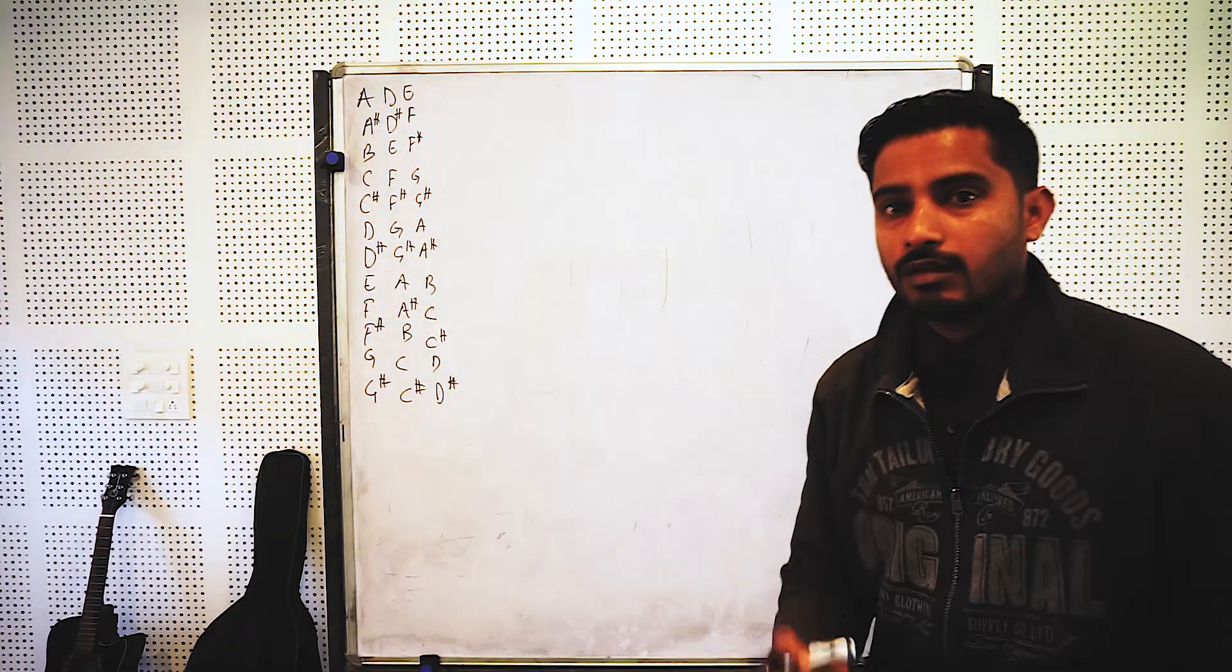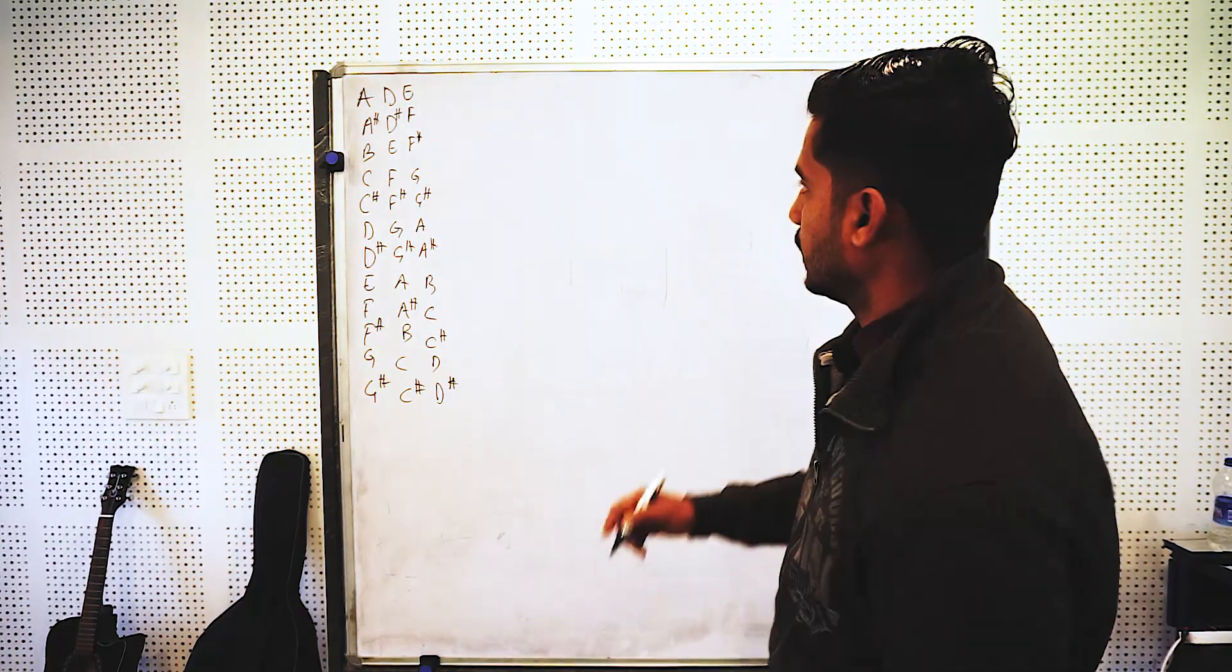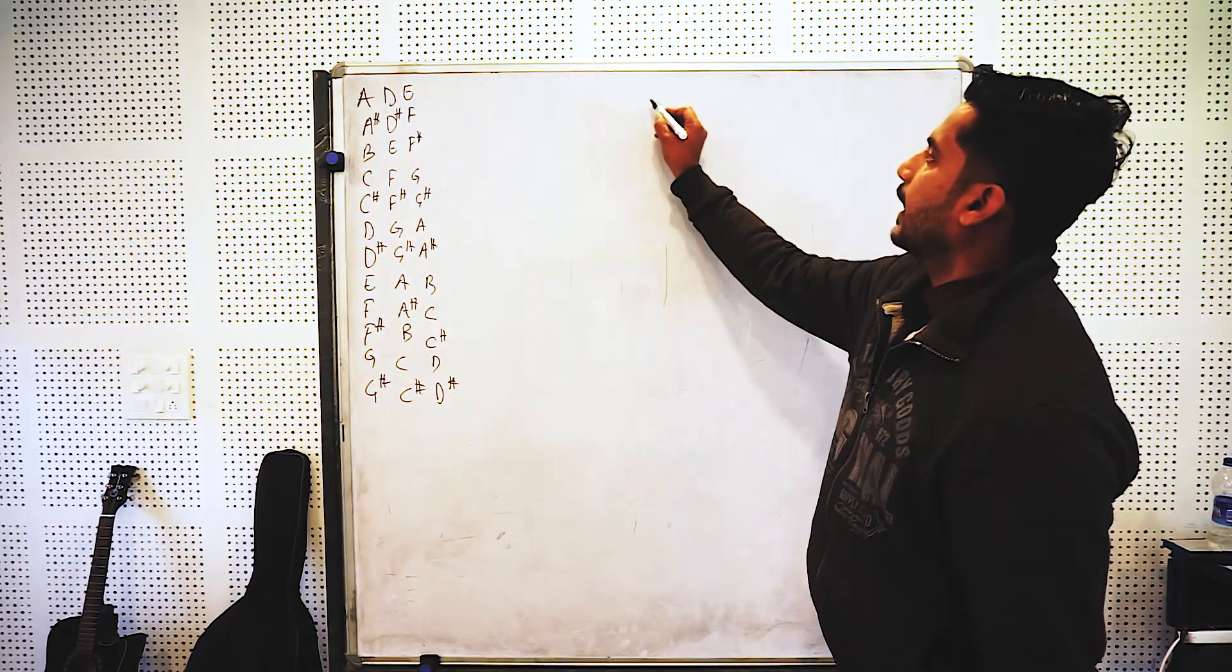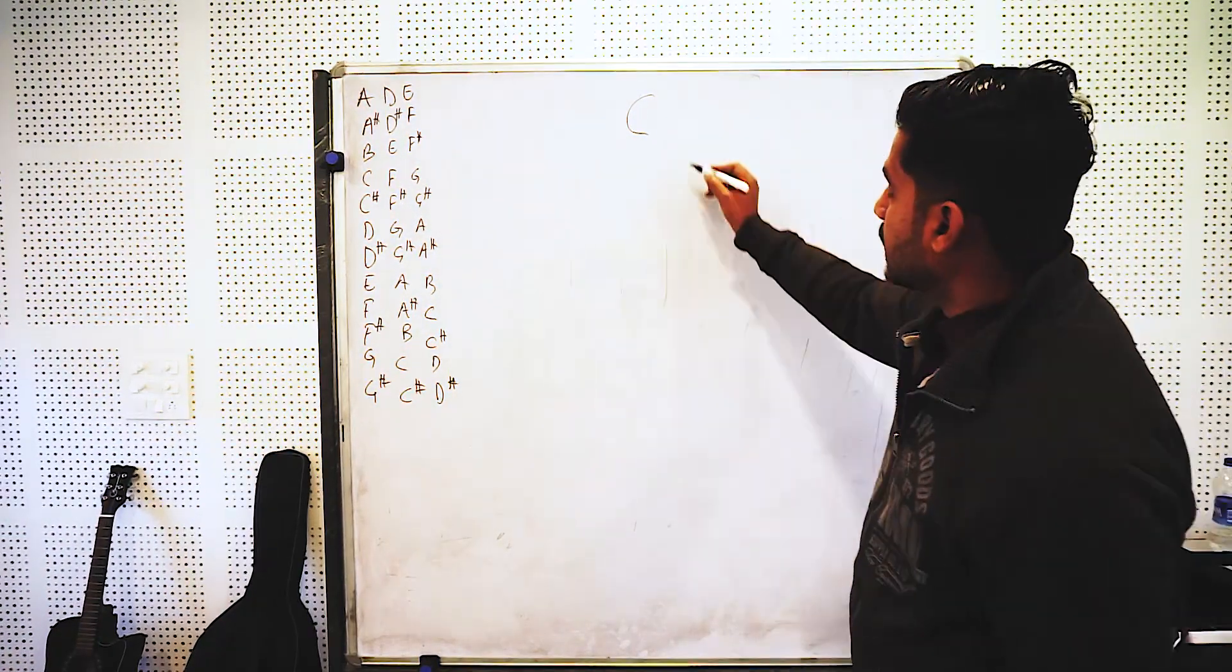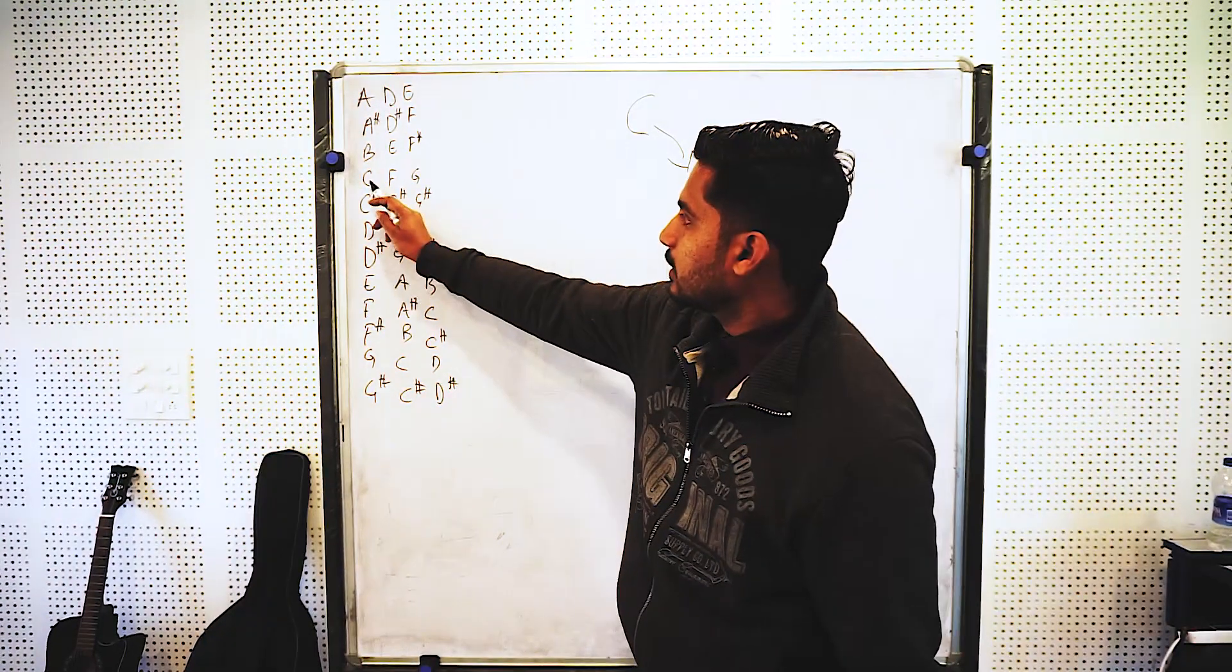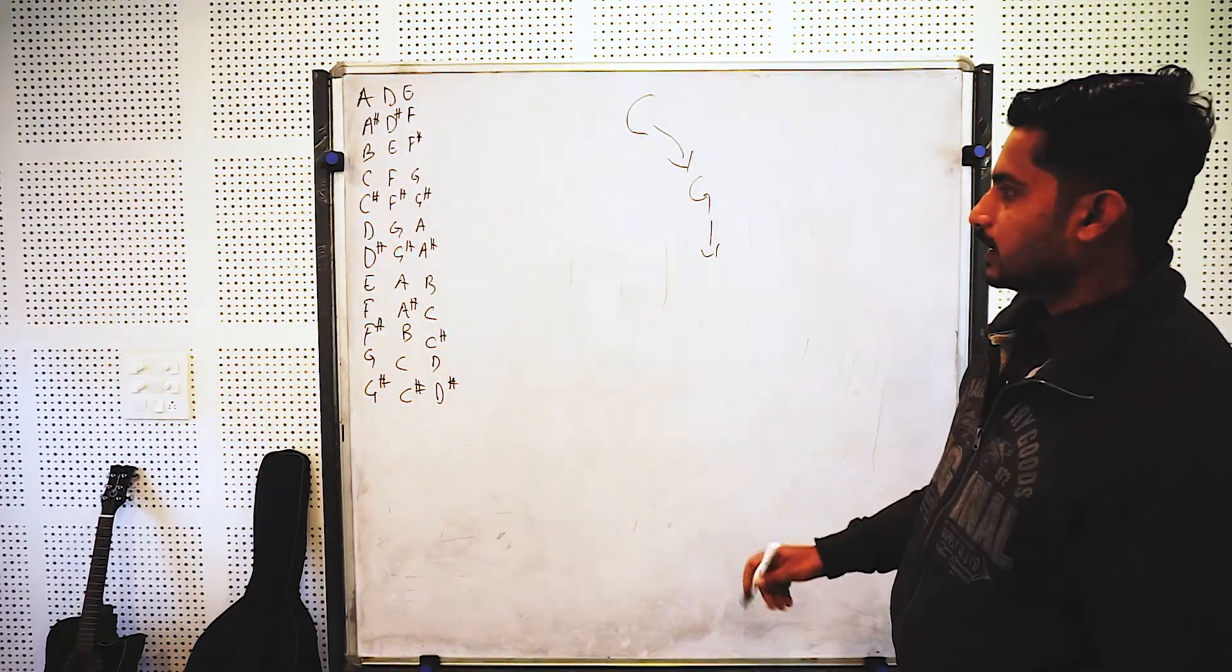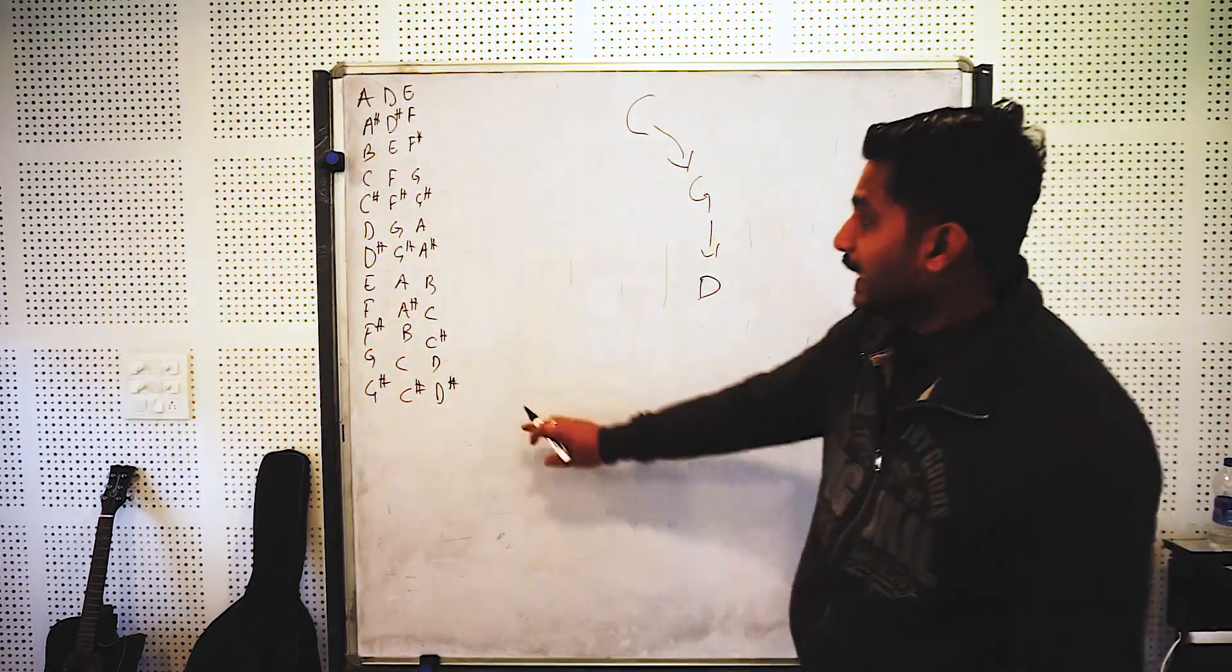What do we do? The circle of fifths means that we go in fifths. In fifths we will start with C. We will take C and keep going in fifths. So, we will go to C. From C, we will find G. So, we have G.